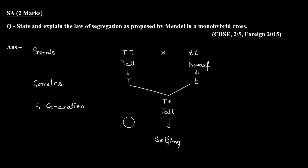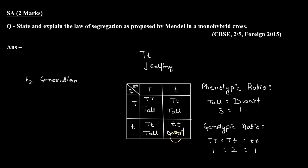If we look at the F1 generation, the dwarf recessive trait had disappeared. But in the F2 generation it reappeared. This means that the alleles are not blending and they are independently segregated. So I hope this question is clear to you. Thank you.